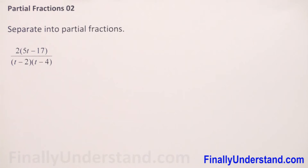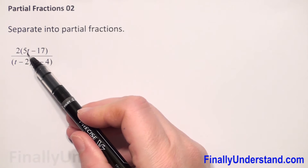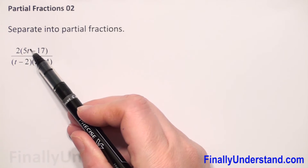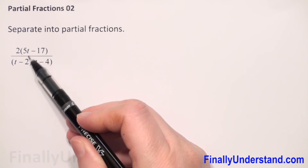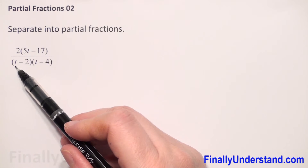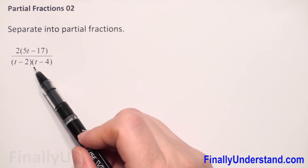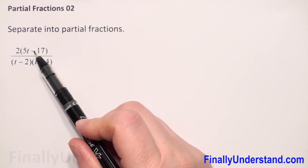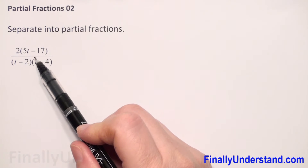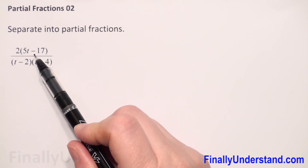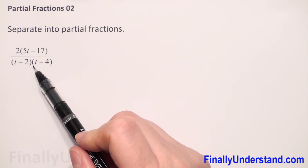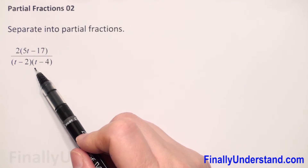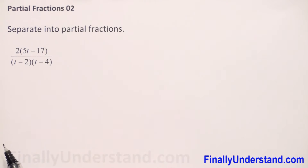First, we always have to check the power of the numerator and denominator. In this example, in the numerator we have t to the first power, and in the denominator when we multiply t times t we get t squared. So the denominator has a higher power — everything is okay. If the numerator power were greater than the denominator, we would have to do long division first. But in this example, everything is okay.